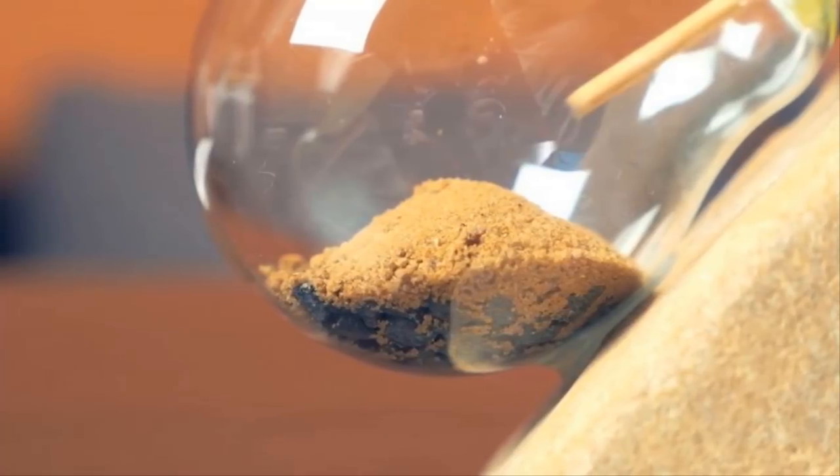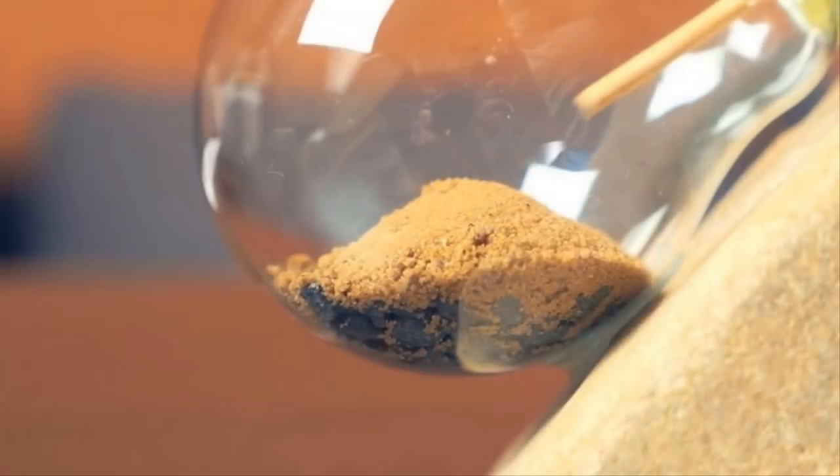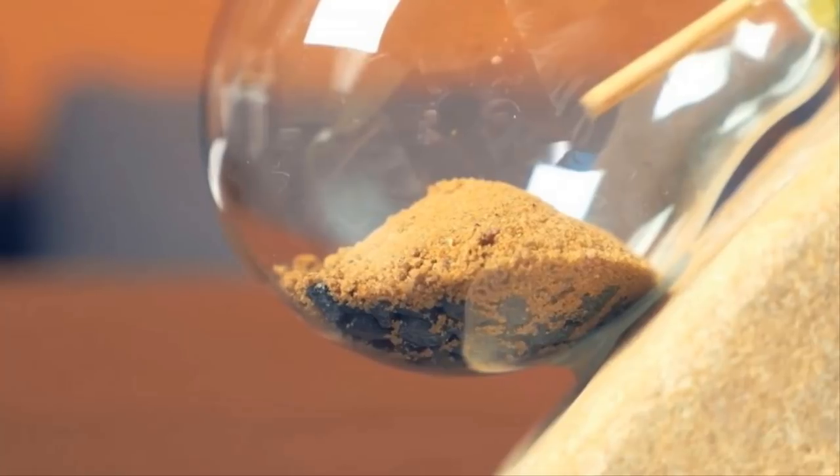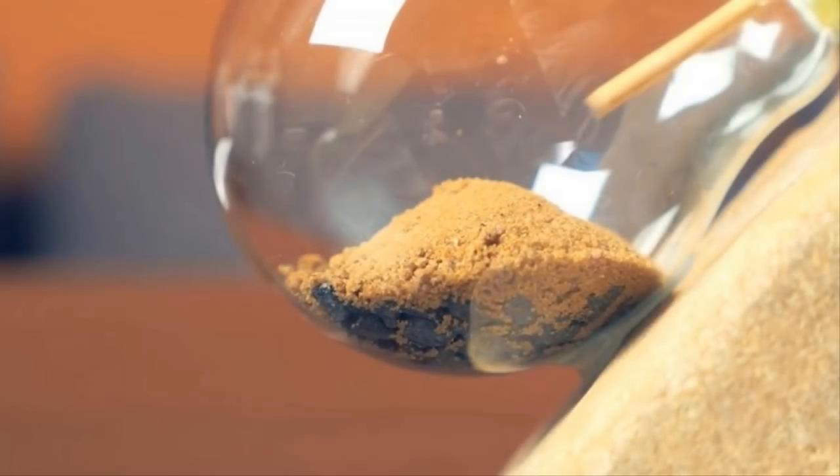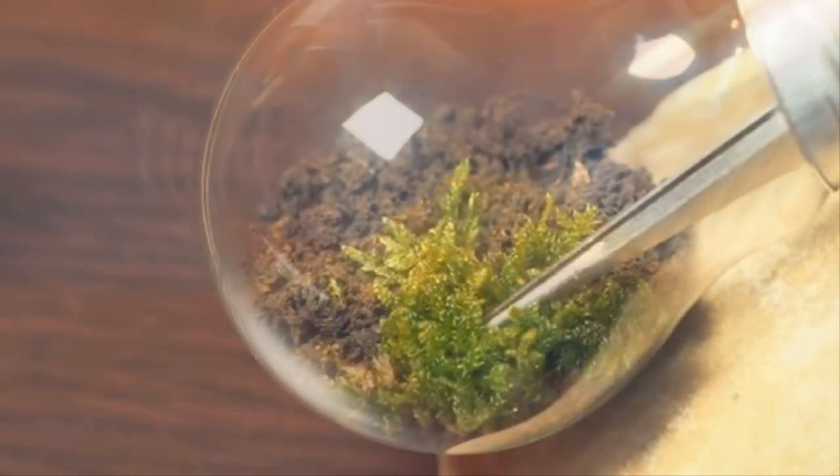Use a pair of tweezers and some surgical precision, or at least the precision you develop from playing Operation back in the day. You can now insert a plant of your choosing into the dirt of your light bulb terrarium.